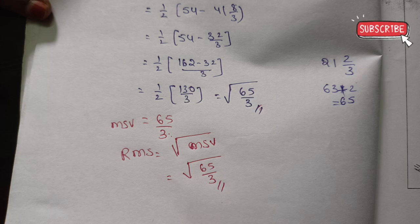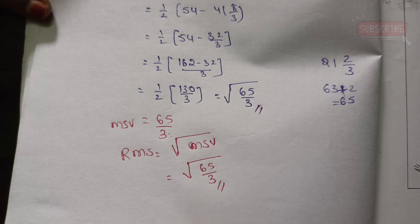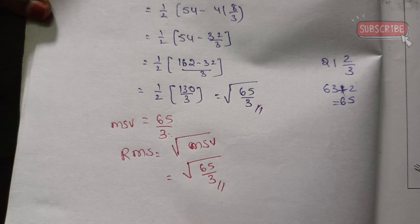Calculating 130/3 gives approximately 43.33. As a mixed fraction: 65/3. So MSV = 65/3. Therefore RMS = √(65/3).